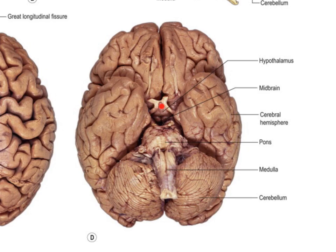We can see the optic chiasm and the pituitary stalk just there. We can also see these two little mammillary bodies here, which are part of the limbic system - you don't need to know too much about them, but just know that they're there, visible as two little outcroppings just above the midbrain. A final and crucial part of the brain I want to draw your attention to - and I'm going to colour these regions in to emphasise them - is this very medial-most part of the temporal lobe here.